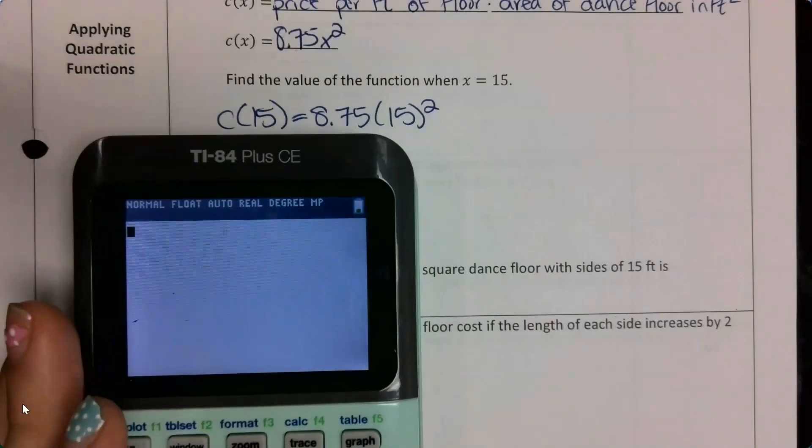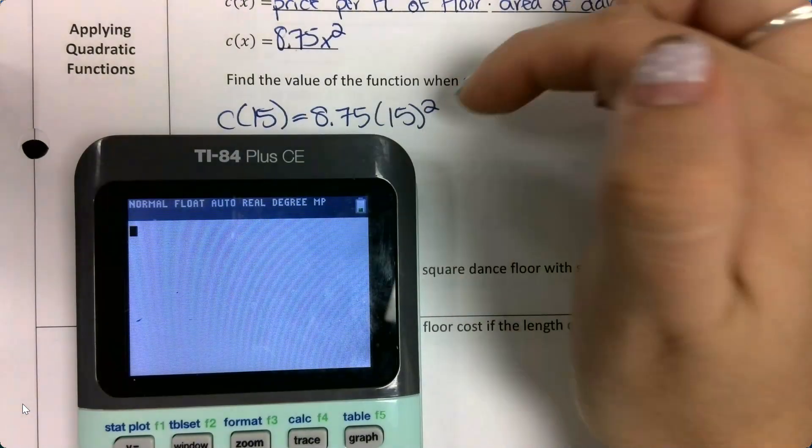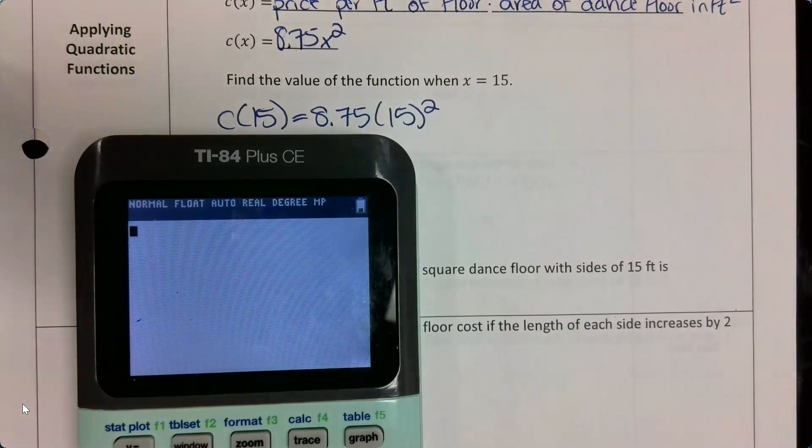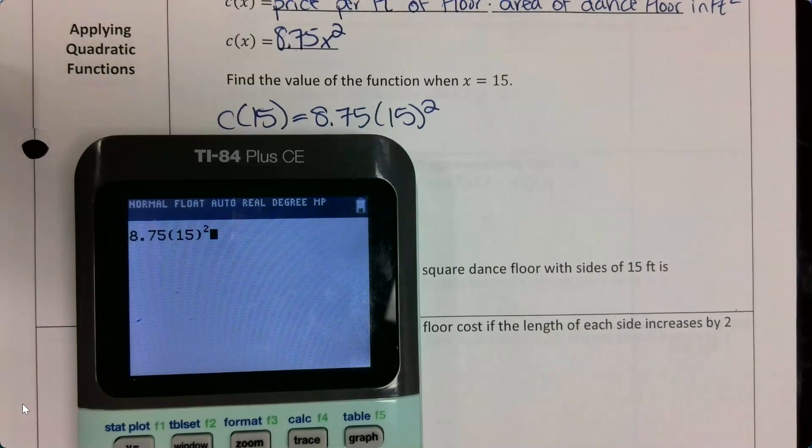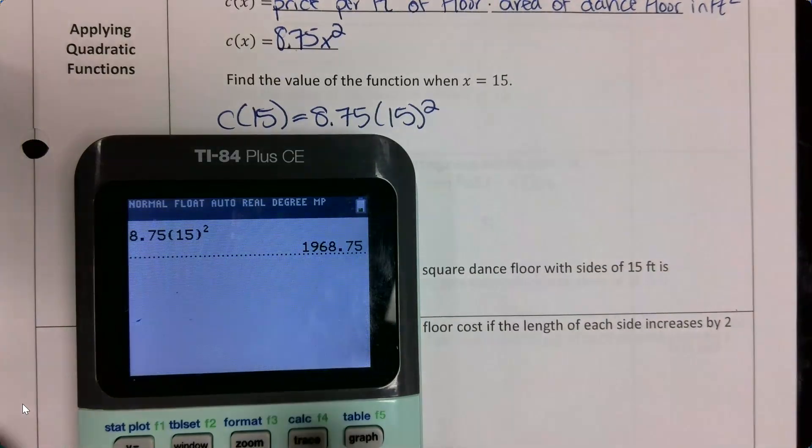Okay, so I want to go ahead and type this into my calculator. When I type it in, I'm just typing in the right side because the left side is telling me what I plugged into the equation. So I'm going to do 8.75 times 15 squared, which gets me 1968.75.